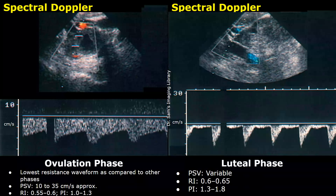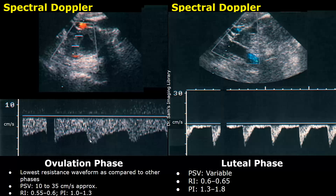The next phase is the ovulation phase. The waveform has the lowest resistance as compared to other phases. We can see a broad waveform with broad peaks. A low resistance blood flow is seen because there is an increased demand by the dominant follicle for blood. The values of PSV, RI, and PI are similar to those seen in the late follicular phase.